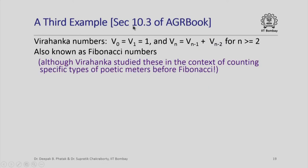Here is a third example from section 10.3 of the textbook. We want to compute Virahanka numbers: the 0th and 1st Virahanka numbers are both 1, and for all n >= 2, the nth Virahanka number is obtained by adding the previous two. These numbers are also popularly known as Fibonacci numbers, although it is interesting to note that Virahanka studied these numbers in the context of counting specific types of poetic meters way before Fibonacci did.